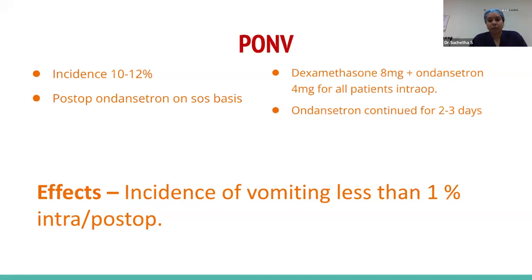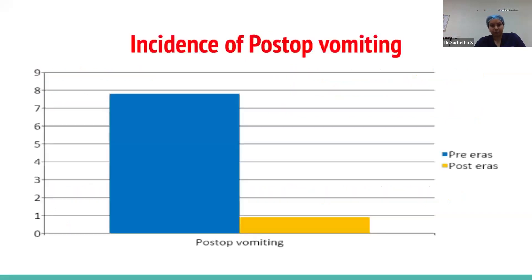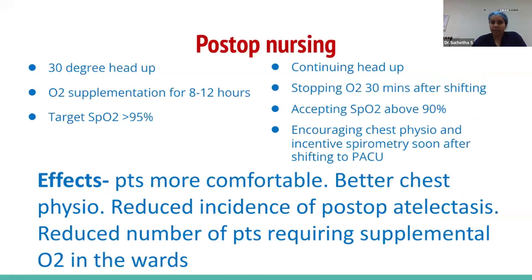For PONV, the protocol is 8 mg dexamethasone and 4 mg ondansetron for all patients intraoperatively, with ondansetron continued for two to three days. The incidence of vomiting has dropped to less than 1%. For post-op nursing: 30-degree head-up position, stopping supplemental oxygen 30–60 minutes after shifting to the post-op monitoring unit, accepting saturations above 90%, and encouraging chest physiotherapy, spirometry, and ambulation. Results: better chest physiotherapy, reduced post-operative atelectasis, and fewer patients requiring supplemental oxygen in the wards.